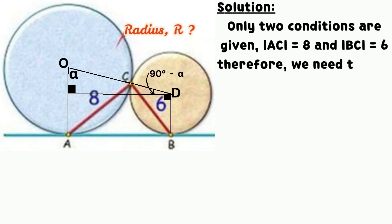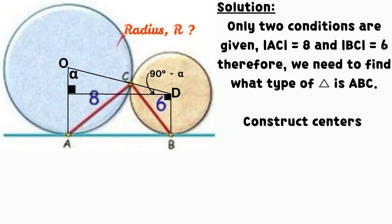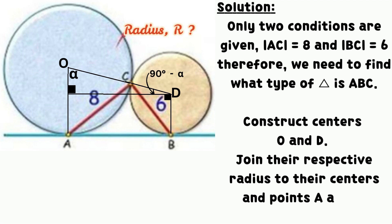Only two conditions are given to solve this question: AC equals 8 and BC equals 6. Therefore, we need to find what type of triangle is ABC. Construct centers O and D respectively. Join their respective radius to their centers and points A and B respectively.